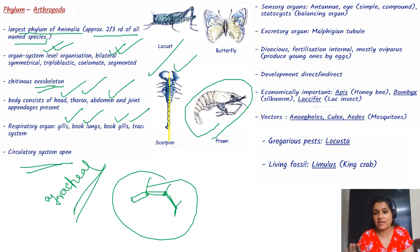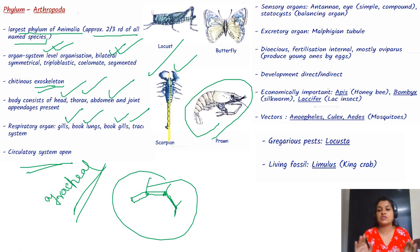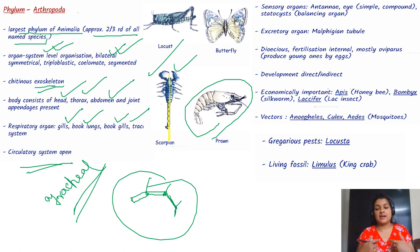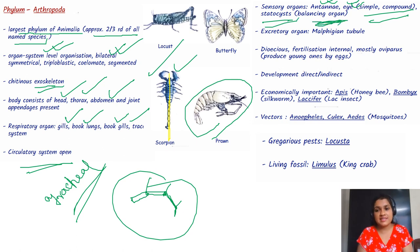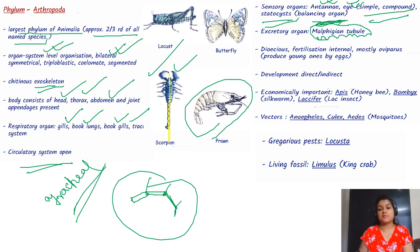The circulatory system is open — unlike Annelida where it is closed, here the cells are directly bathed in blood without a proper artery or vein network. Sensory organs include antennae, eyes which may be simple or compound, and statocysts or balancing organs. The excretory organ is known as Malpighian tubules — this is a very important exam question.